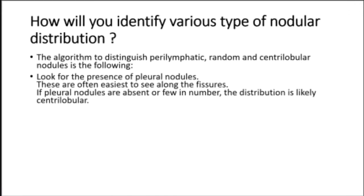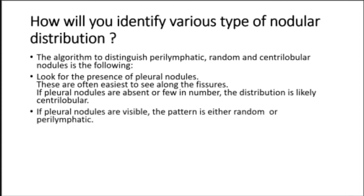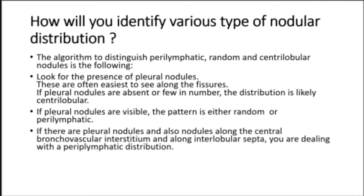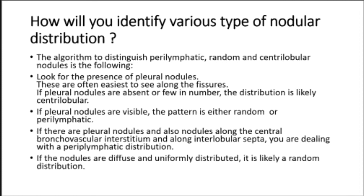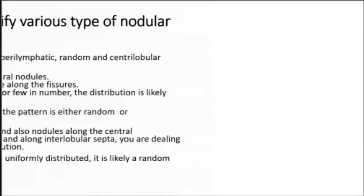To identify various types of nodular distribution: look for the presence of pleural nodules, which are often easiest to see along the fissures. If pleural nodules are absent or few in number, the distribution is likely centrilobular. If pleural nodules are visible, the pattern is either random or perilymphatic. If there are pleural nodules along the central bronchovascular interstitium and interlobular septa, it is a perilymphatic distribution.